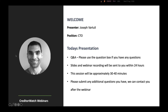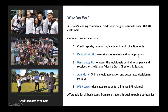Just a brief introduction about who we are. We've got a mix of customers and people that probably haven't used CreditWatch before. We're Australia's leading commercial credit bureau with over 50,000 customers. Our main products are divided into five categories: credit reporting, monitoring, alerting, and debt collection tools.